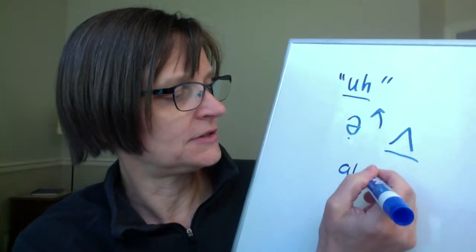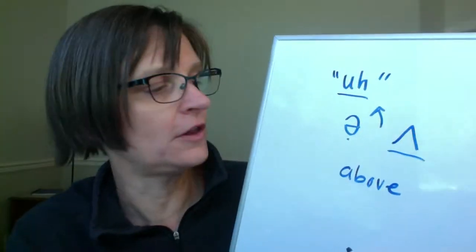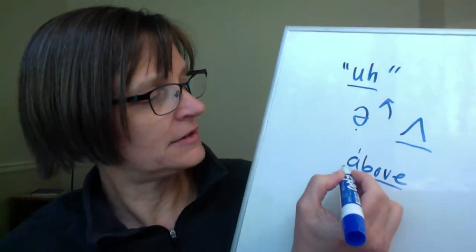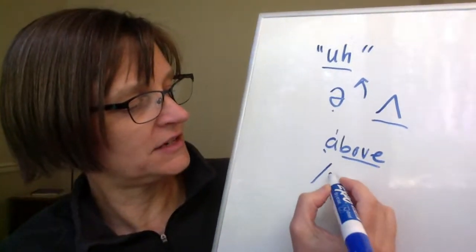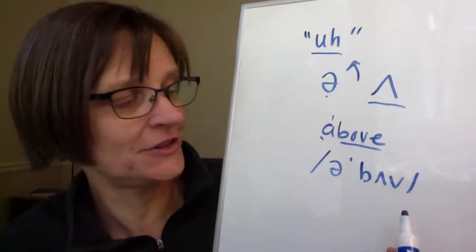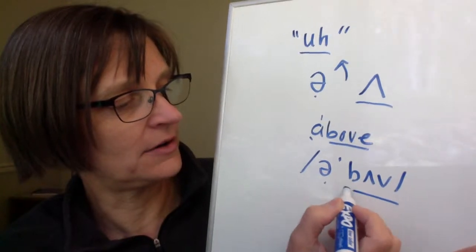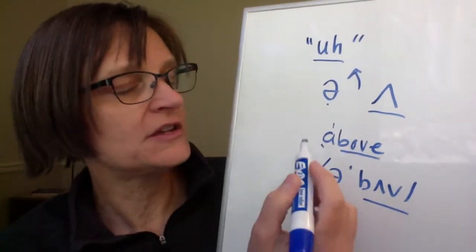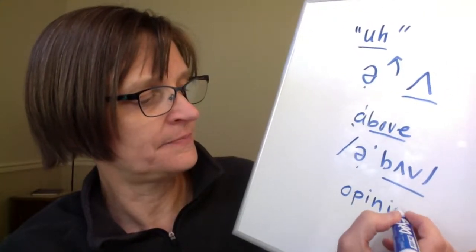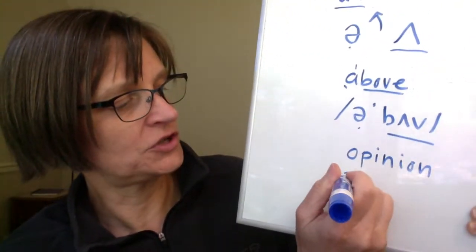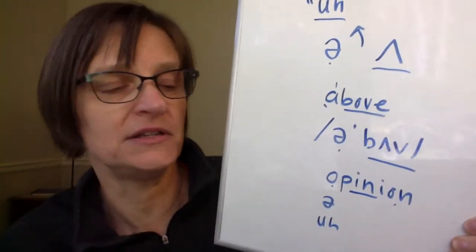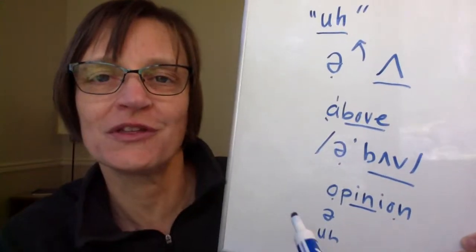The example word I like to use is 'above' because it has both the short and the long schwa. The long schwa is in the stressed syllable of 'above,' and the short one is in the unstressed syllable. If you see that in the dictionary, it'll look like this: above. A little line tells you the second syllable is stressed. One of the things we'll look at today is other words where the first syllable is an unstressed schwa — for example, in the word 'opinion,' we have a schwa sound with second syllable stress.